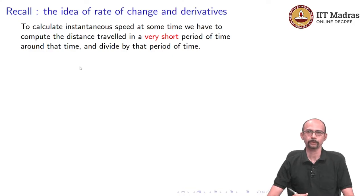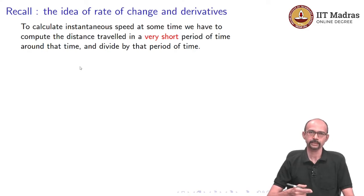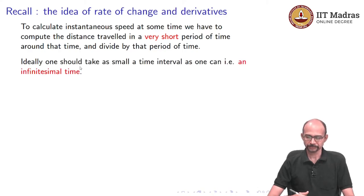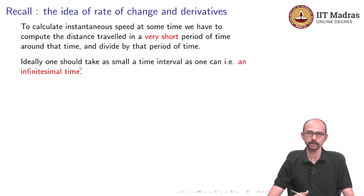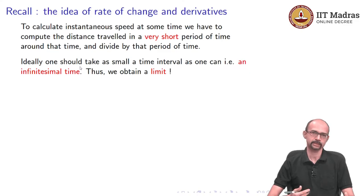In particular, we had the example of a truck travelling from Punjab to Tamil Nadu, and based on that example we extrapolated what the correct definition should be. Ideally, one should take this time interval as small as possible — that was the main content of that example. And we move towards this idea of an infinitesimal time, which is just the limit.